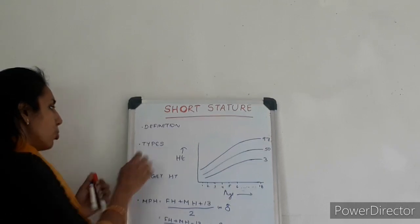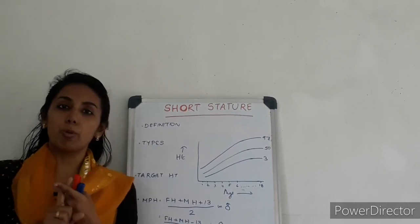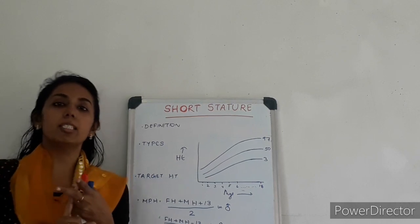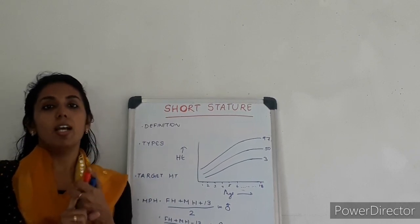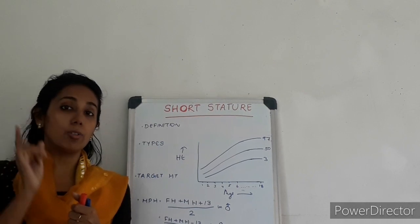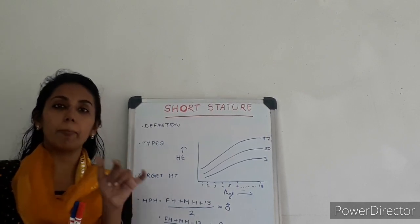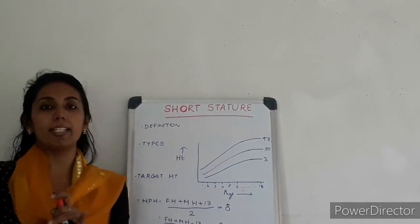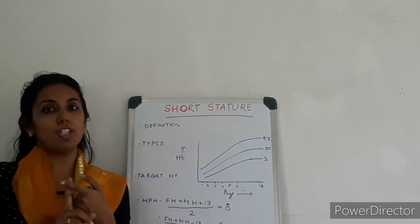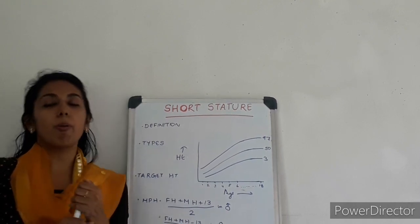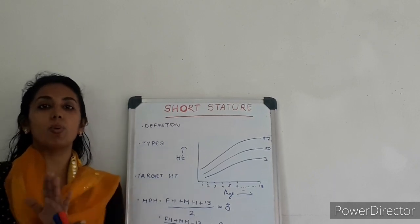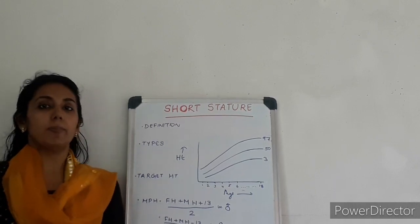We have two types: one is proportionate short stature, another one is disproportionate short stature. Proportionate short stature means the upper segment to lower segment ratio is maintained — that means it is unchanged. Disproportionate short stature is where the upper segment to lower segment ratio is altered.